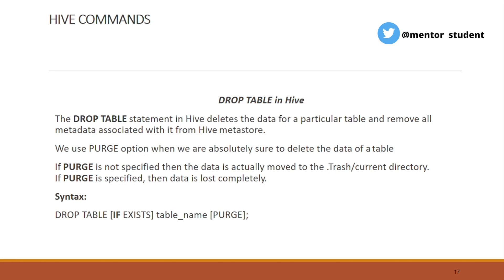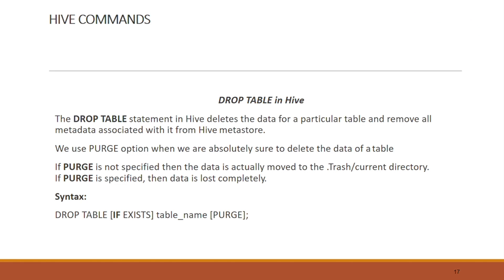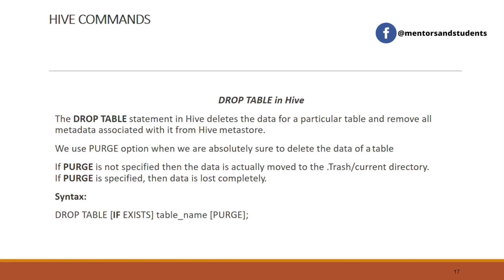The next command is drop table command. Drop table command is basically used to delete a particular table in the Hive metastore. We use the PURGE option when we are absolutely sure to delete the data of a table. If PURGE is not specified, data is moved to the trash; if PURGE is specified, data is lost completely. Syntax: DROP TABLE IF EXISTS table_name PURGE.